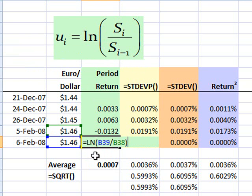It's the equals LN, that's the Excel function for natural log, of the price or the exchange rate on February 6th divided by the exchange rate on February 5th.